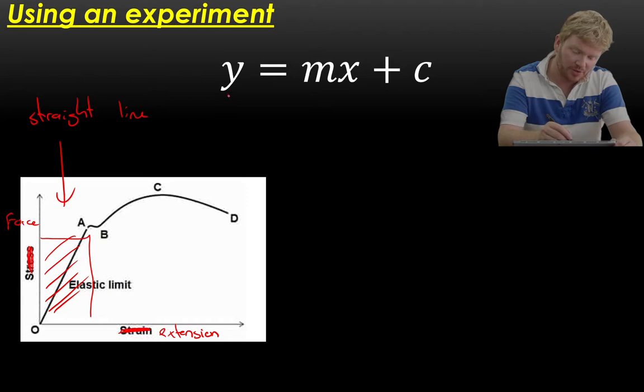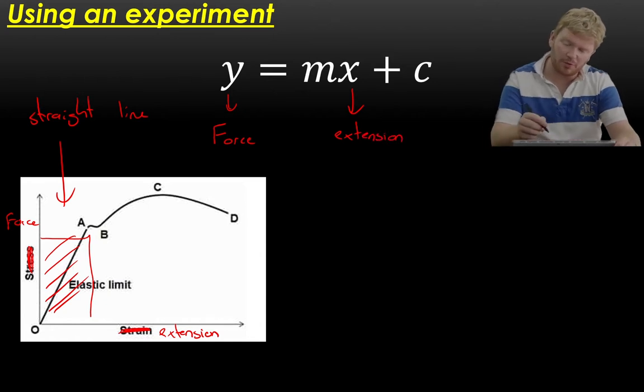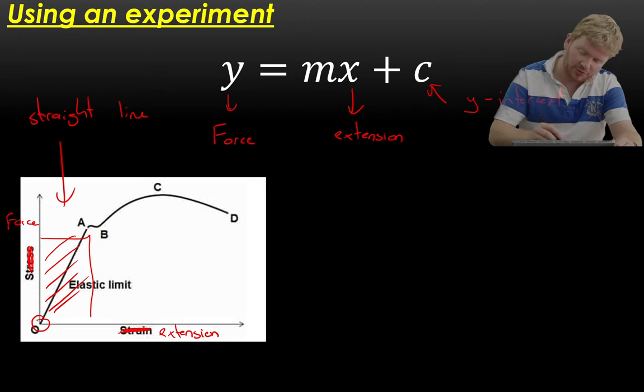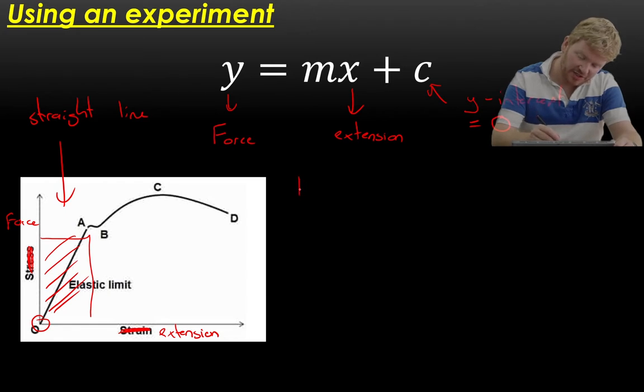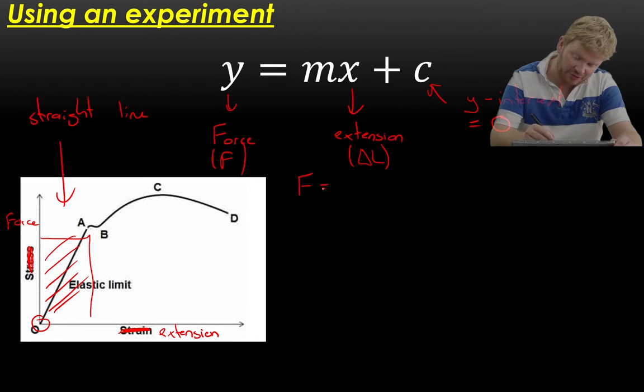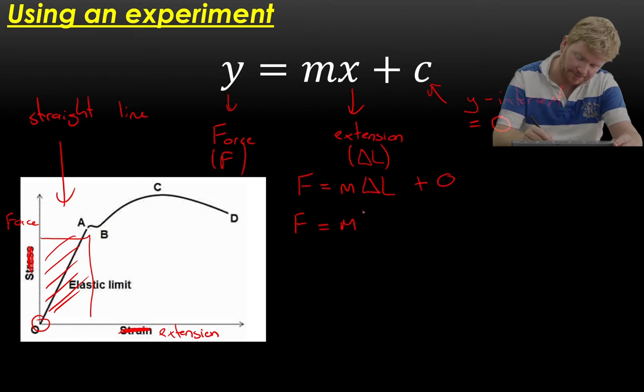Now, it being a straight line means we can do something quite cool. We can say, well, what actually is my Y axis? In this case, my Y axis is the force. What is my X axis? My X axis is the extension. Then we can go one further. We can say, well, what is C? C is the Y intercept. And in this case, we can see it goes through the origin. So I can say that is equal to zero. So what I get now is I can say that the force, I'm going to say extension is this symbol delta L. Remember delta means change. So I can say that F is equal to M multiplied by delta L plus zero. And obviously because it's plus zero, I don't actually need to include it. So I can say F is equal to M delta L.